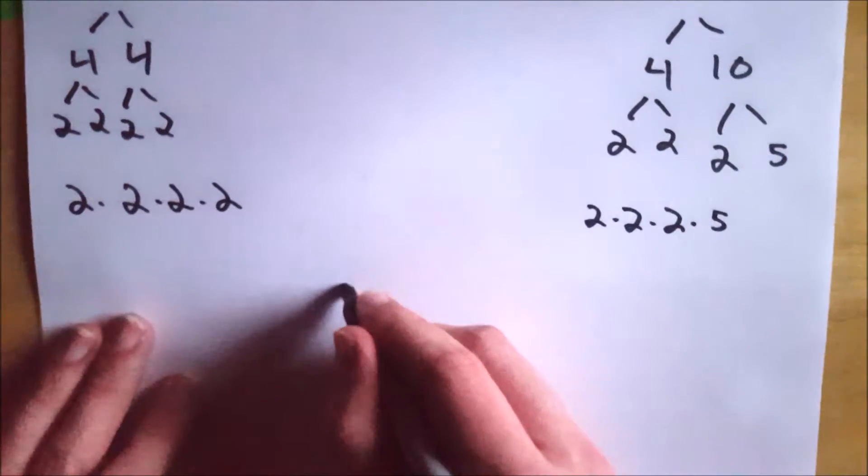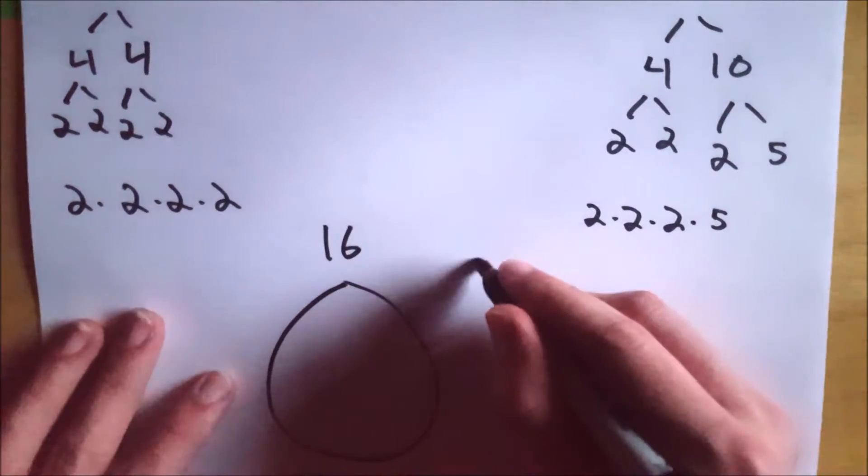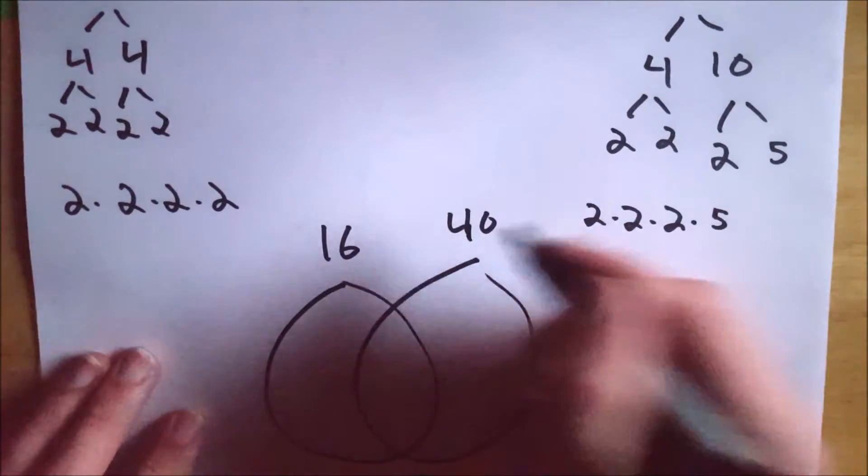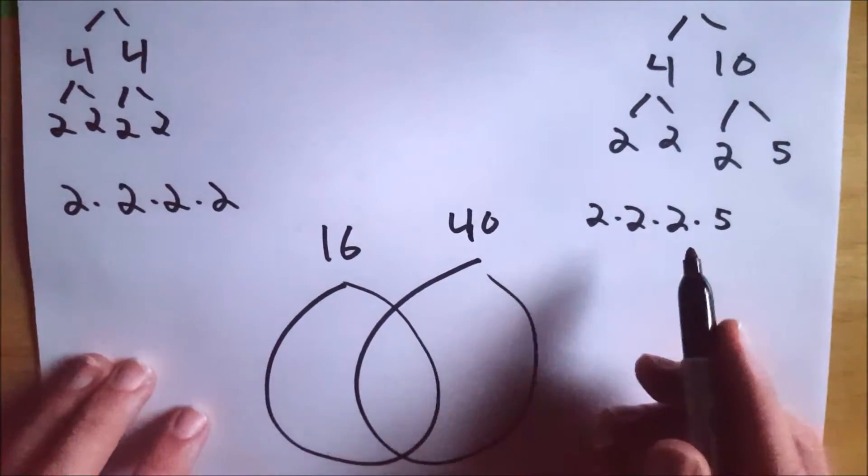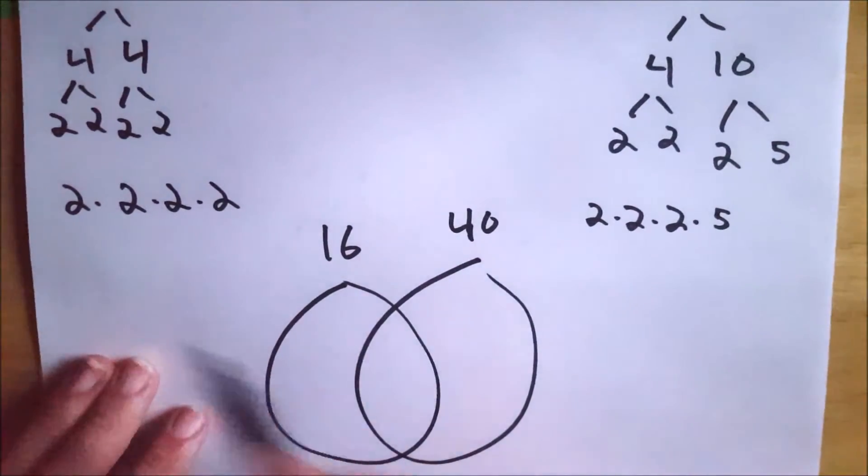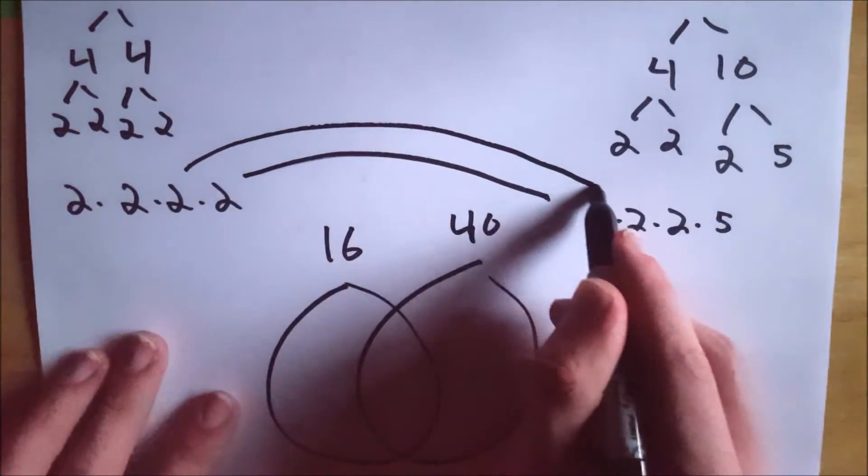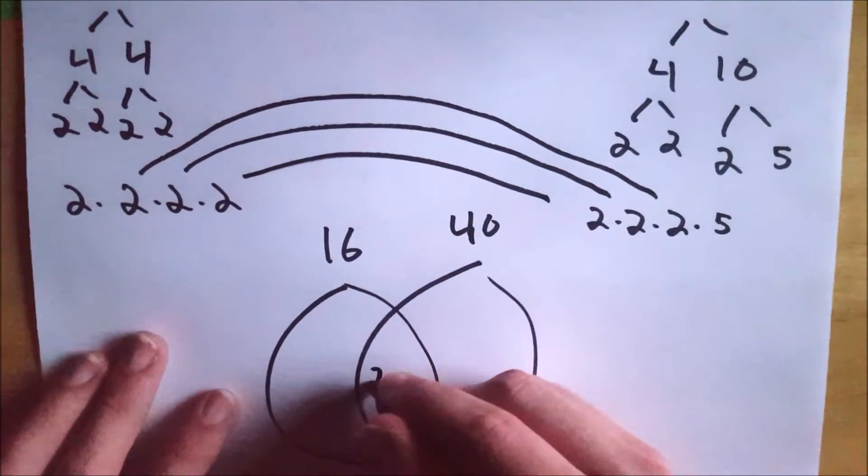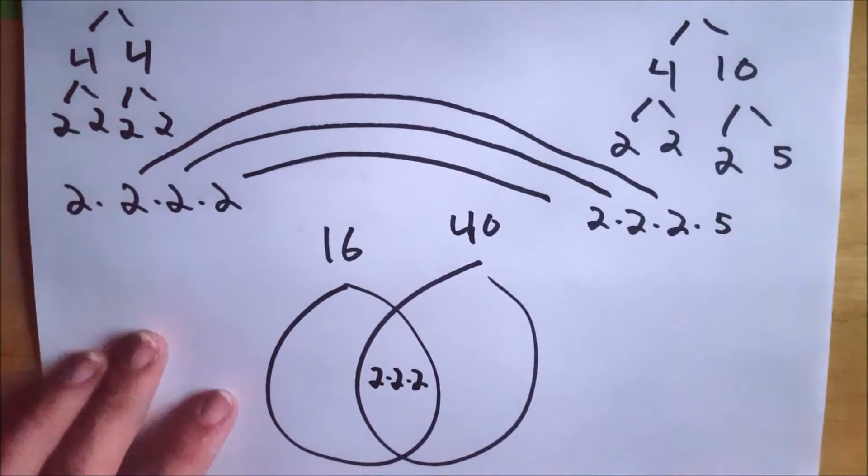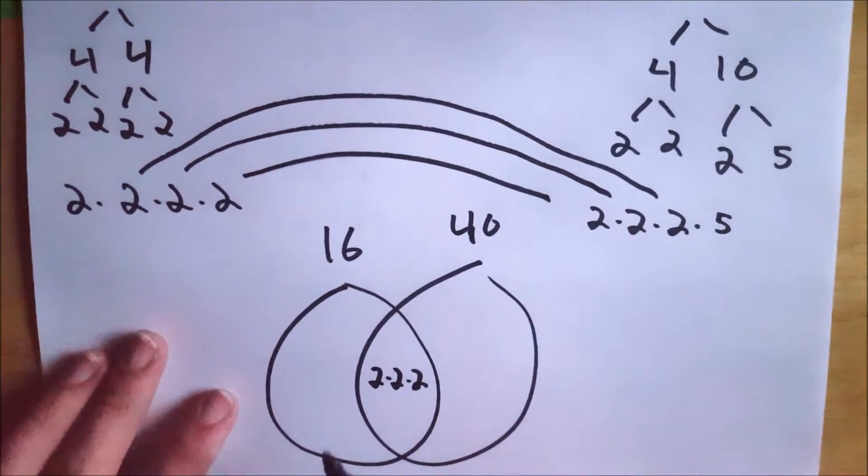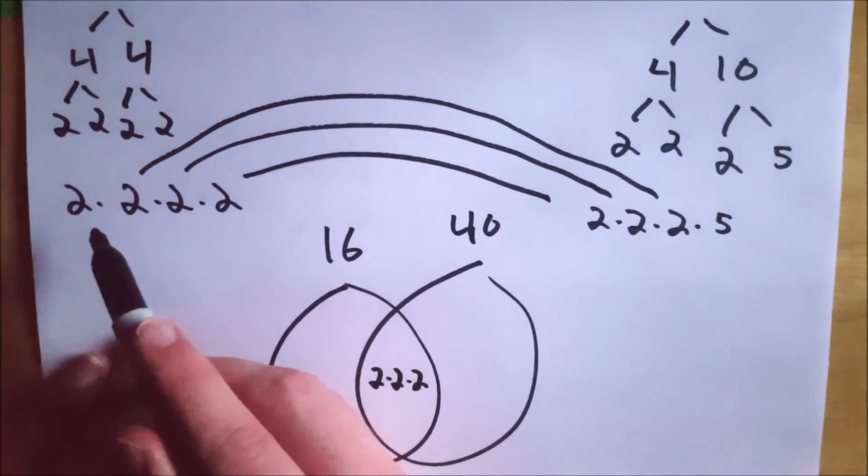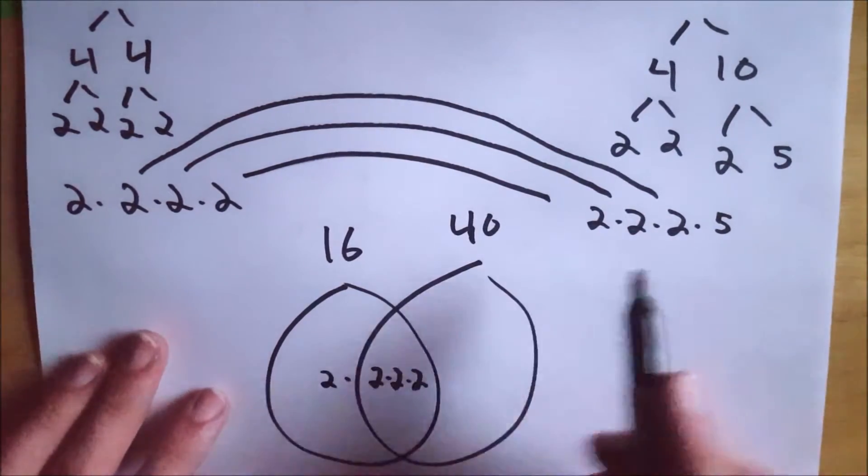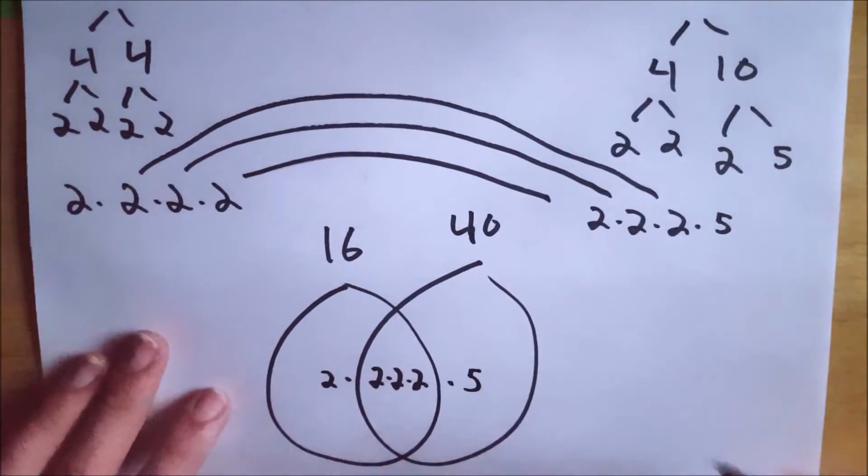Now we can move on to our Venn diagram. This is a 16 circle. This is the 40 circle. So now we want to match up the numbers that we can from the prime factorizations. So there's 3 2s in 40 and there's 3 2s in 16 plus another. So we can match up 3 2s from these prime factorizations. And all of those matchups will go in the middle. So we add 3 2s. That's 2 times 2 times 2 right in the middle. And then you take the excess and put the excess in its respective circle. So for 16, we have 1 2 left. So that will go in the 16 circle. And then for 40, we've got 1 5 left. And that will go in the 40 circle.